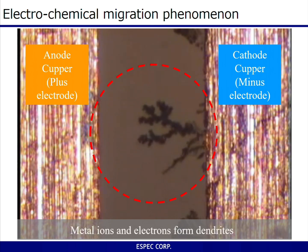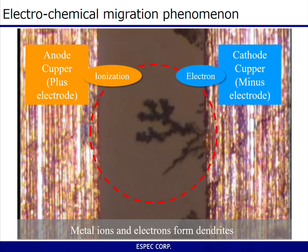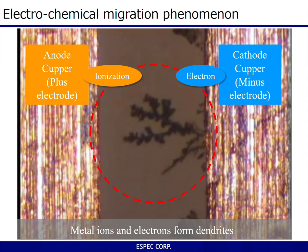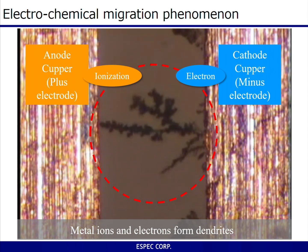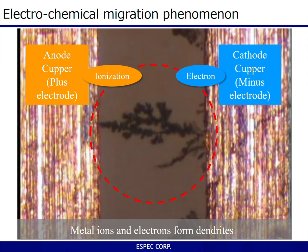A circuit is formed as the dendrite reaches the anode on the left side, thus current flows through the dendrite. This short circuit between the electrodes may cause a device malfunction, failure, or even fire.